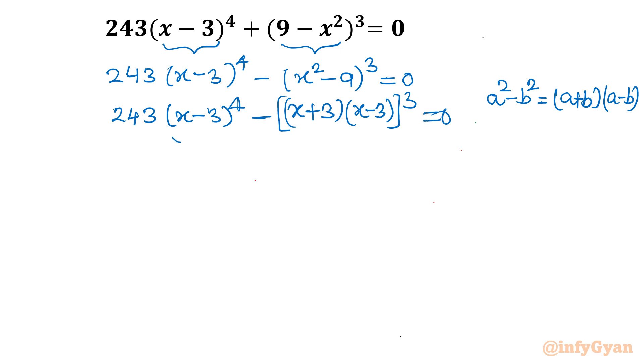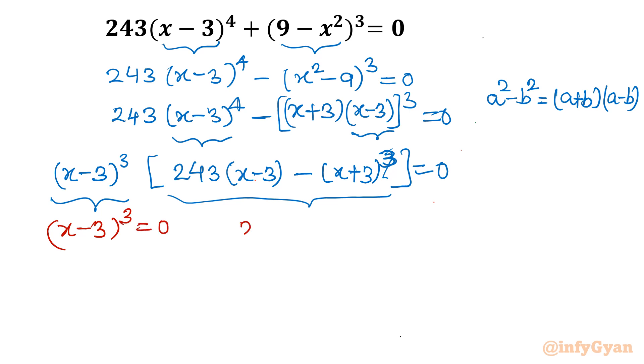This term would be as it is 243(x-3)⁴ minus equal to 0. Now you can see (x-3)³ we can take common. So (x-3)³ times [243(x-3) minus (x+3)³] equal to 0. Now it is a cubic equation from the product of these two equal to 0. So let me write that equation first then we will solve this cubic also.